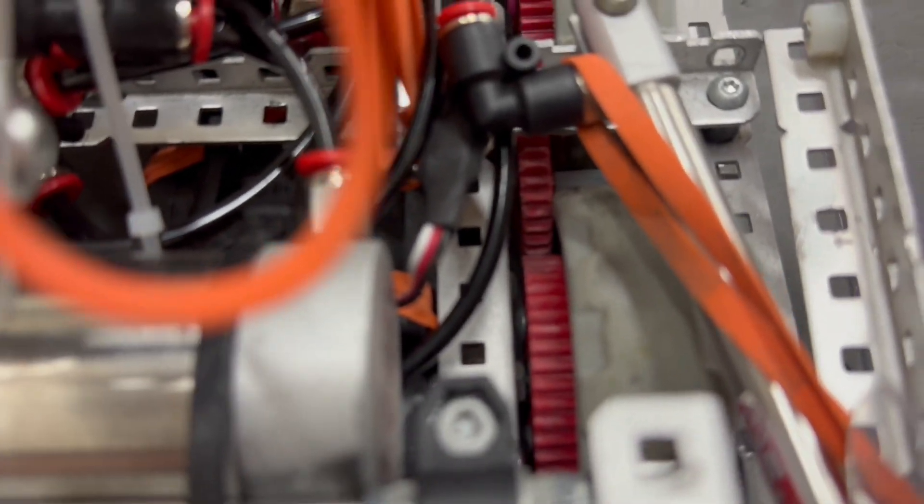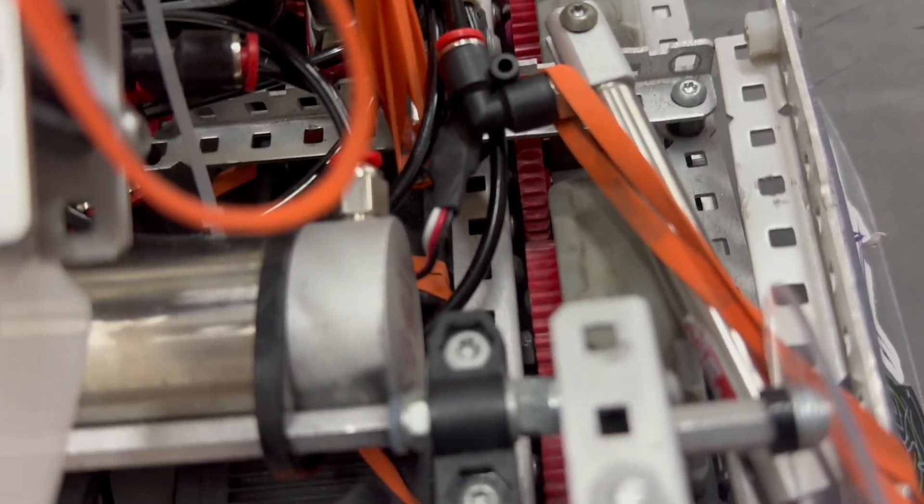We also ran thinner wheels to reduce our robot profile, which helps with getting through alleyways and in general, maneuverability.